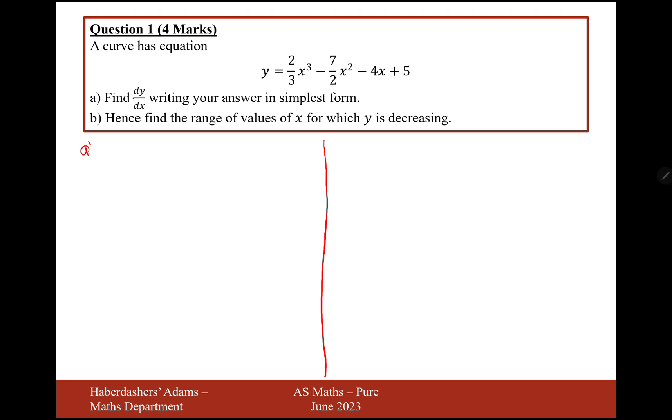Okay, so we need to differentiate this, so that means we need to write dy by dx at the start, and then the power is going to multiply the number at the front, so 2/3 times 3 gives us 2, and then you reduce the power by 1.